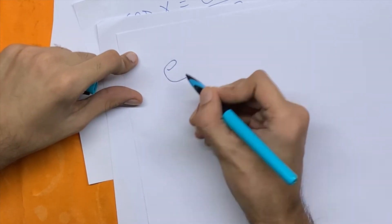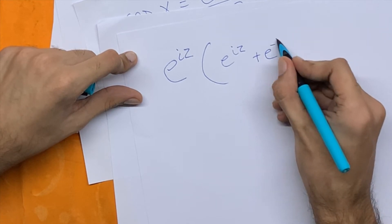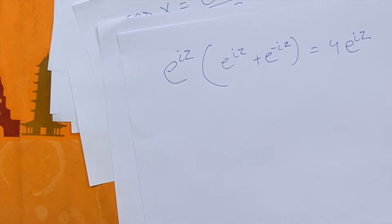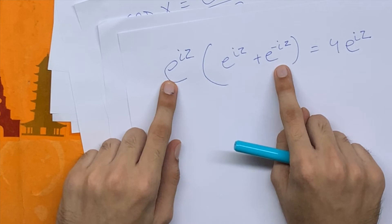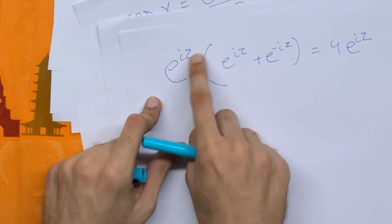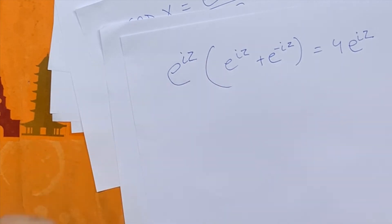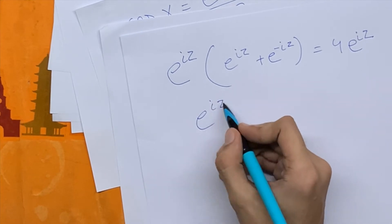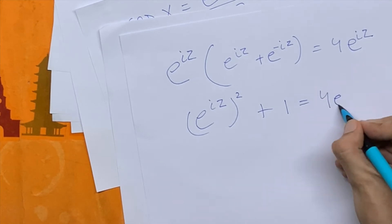Now if we multiply both sides by e to the power iz, we'll get e to the power iz times e to the power iz plus e to the power minus iz is equal to 4 times e to the power iz. I multiplied by e to the power iz so that these two cancel out — we'll be left with e to the power iz minus iz, which is e to the power 0, which is 1. So we'll end up with a quadratic equation: e to the power iz whole square plus 1 is equal to 4 times e to the power iz.